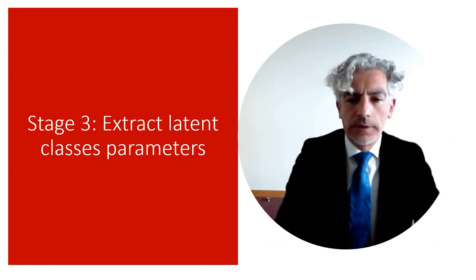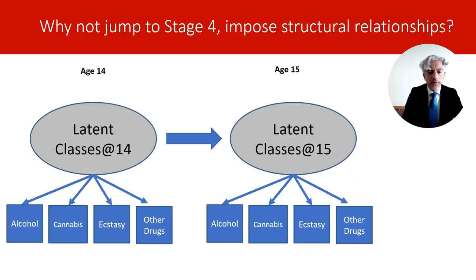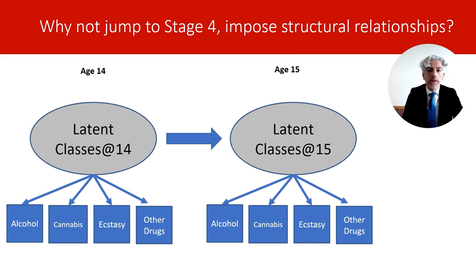The first stage is to extract latent class parameters — basically taking the measurement parameters from the latent class models selected for each time point, and then investigating the association between the latent classes and change across time. The question is: why do we need to do this? Why cannot we jump to investigating the associations between latent classes while at the same time estimating the measurement models?